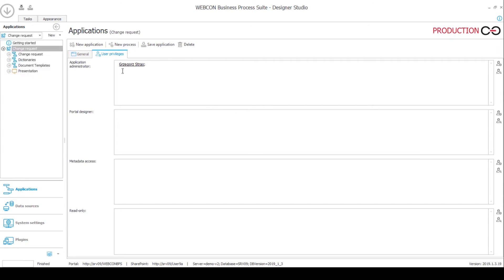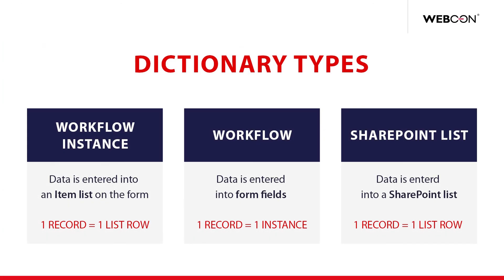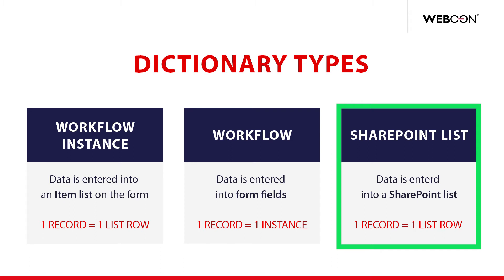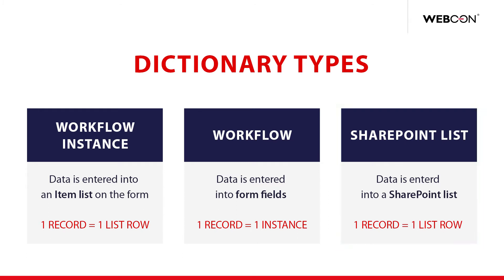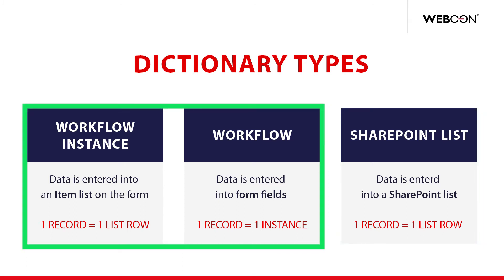One more thing I would like to mention in this video: three of our applications have a dictionary process and I'm going to talk about them a little bit now. Dictionaries are commonly used in Webcon BPS installations to provide values for various types of choice fields, such as drop-down lists or autocomplete fields. One of the most commonly used types is SharePoint lists, however since we are not using SharePoint in this installation we are limited to the two types of dictionaries that do not rely on SharePoint lists and instead rely solely on Webcon BPS, and there are two schools of thought with advantages and disadvantages.